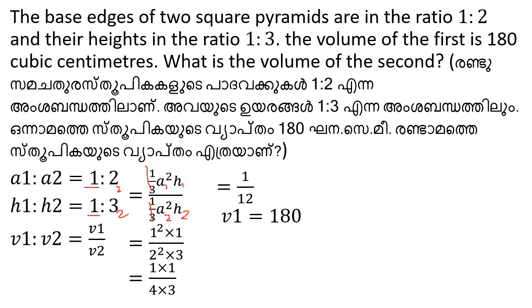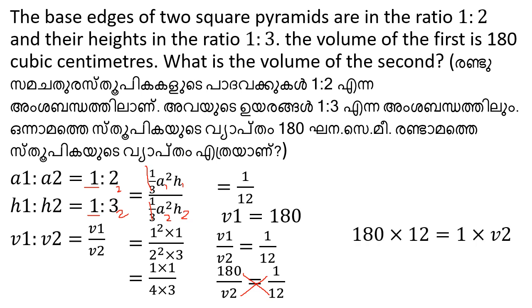Since V1 is 180, we have 180 by V2 equals 1 by 12. Therefore V2 equals 180 multiplied by 12, which gives V2 equals 2160 cubic centimeters.